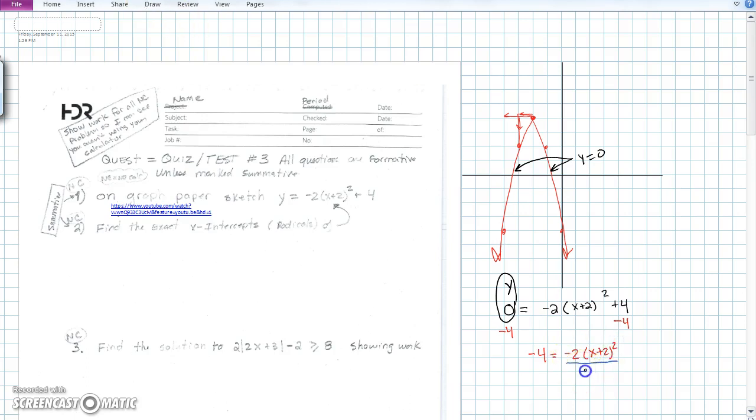I'll then divide by that negative 2, and I'll get 2 equals x plus 2 quantity squared. Take the square root of both sides. This is where I'll get my plus and minus roots.